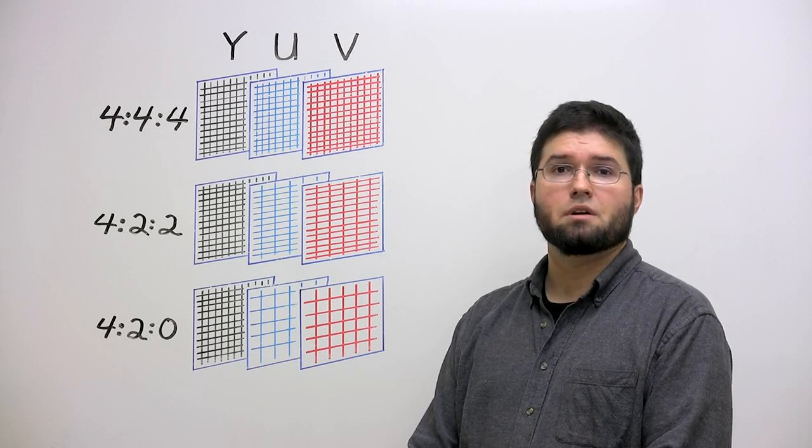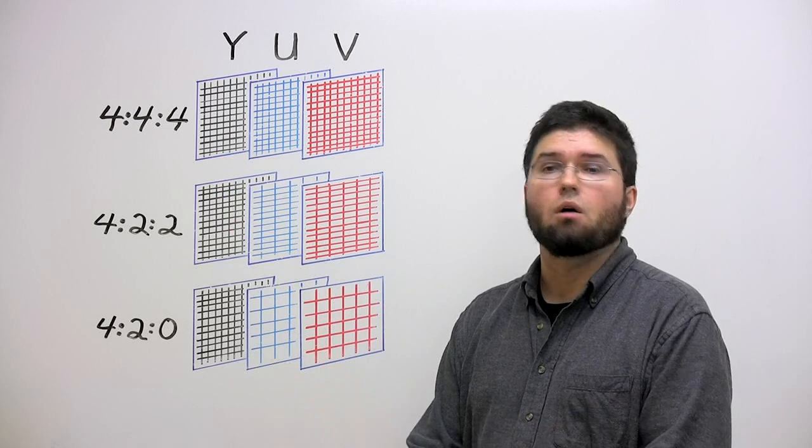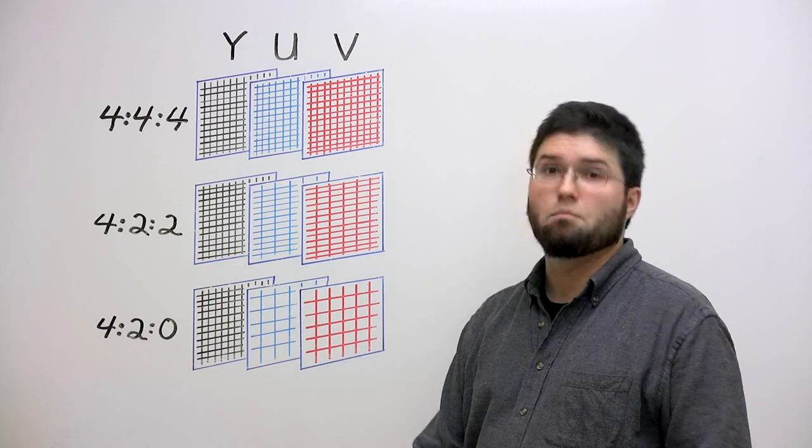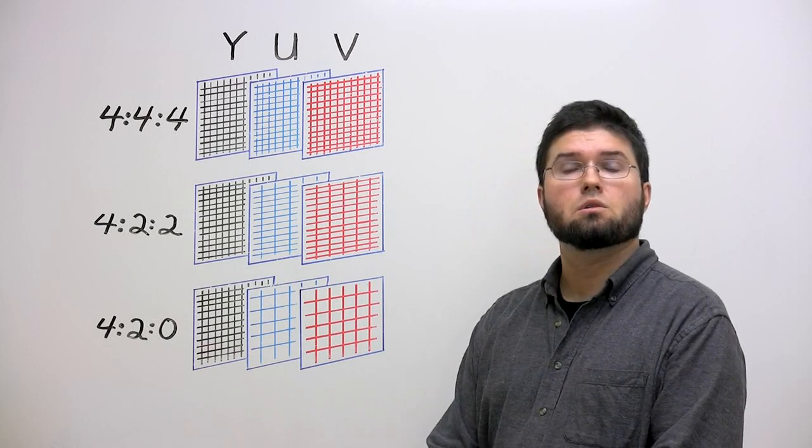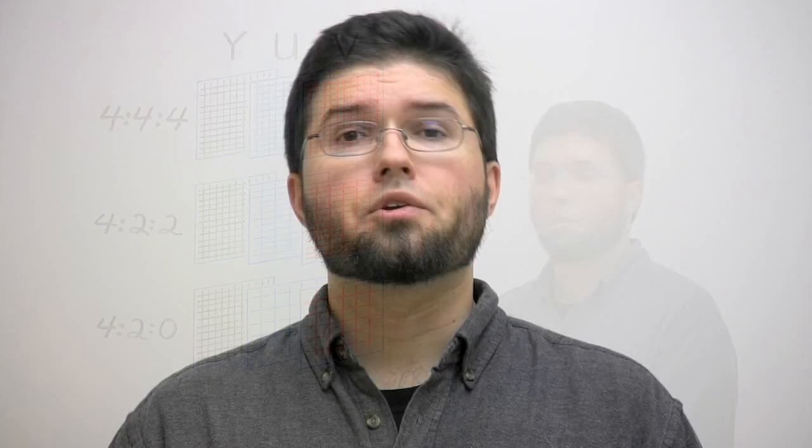Practically every possible subsampling variant has been used at one time or another, but the common choices today are 444 video, which isn't actually subsampled at all, 422 video, in which the horizontal resolution of the U and V channels is halved, and most common of all, 420 video, in which both the horizontal and vertical resolutions of the chroma channels are halved, resulting in U and V planes that are each one-quarter the size of Y. The terms 422, 420, 411, and so on and so forth aren't complete descriptions of a chroma subsampling. There's multiple possible ways to position the chroma pixels relative to Luma, and again, several variants are in active use for each subsampling. For example, MotionJPEG, MPEG1 video, MPEG2 video, DV, Theora, and WebM all use, or can use, 420 subsampling, but they cite the chroma pixels three different ways.